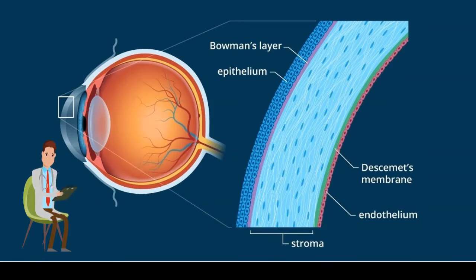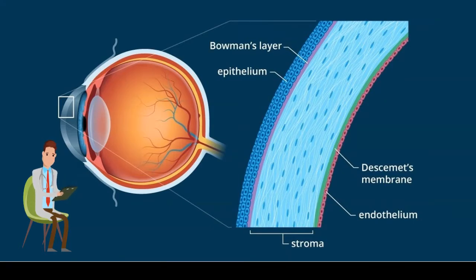Histologically, the cornea is formed of five layers: the epithelium, which is the only regenerative layer; followed by Bowman's layer, which is the acellular layer of the stroma; the stroma, which has keratocytes and collagen; then Descemet's membrane, which is the basement membrane of the endothelium; and finally the endothelial cells, which play an important role in maintaining the compactness of the stroma.